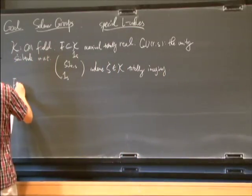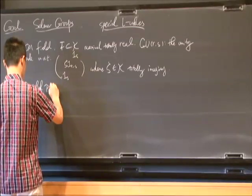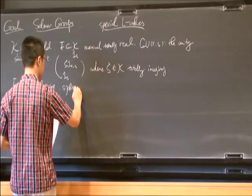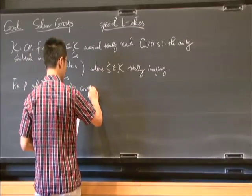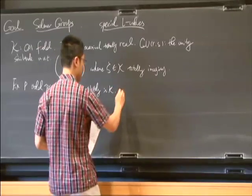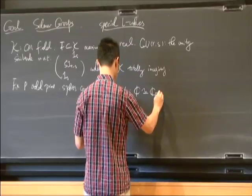We fix some p, some prime p, and for simplicity assume it splits completely in K. We also fix the outer isomorphism of C with C_p.